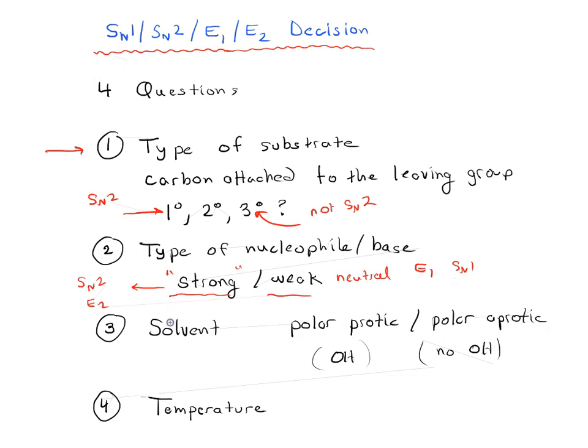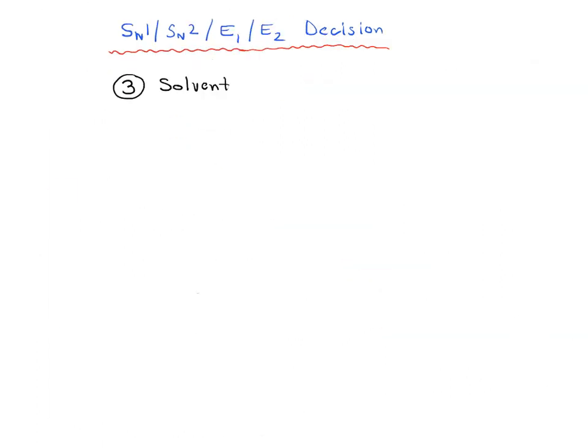And then the next question we really need to ask now is going to be the solvent. By this point, we're really looking at whether this is going to be an SN2 or E2, or if it's going to be E1 or SN1. We'll see number four is going to help us decide E1 versus SN1. But this question of solvent is going to really help us decide SN2 versus E2. So solvent. There's really two major kinds of solvents to think about. There's polar protic and polar aprotic.